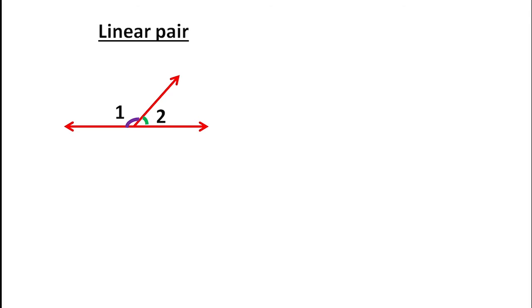Next is linear pair. A linear pair means adjacent angles where the non-common arms form a straight line. The sum of these two angles is 180 degrees. We know that the angle in a straight line is 180 degrees, so angle 1 plus angle 2 equals 180 degrees. The non-common arms, shown in blue, form a straight line.